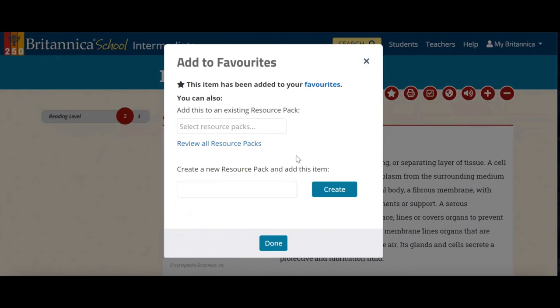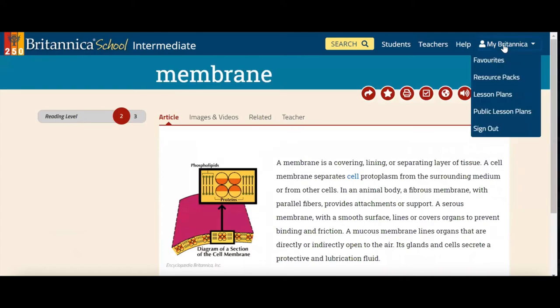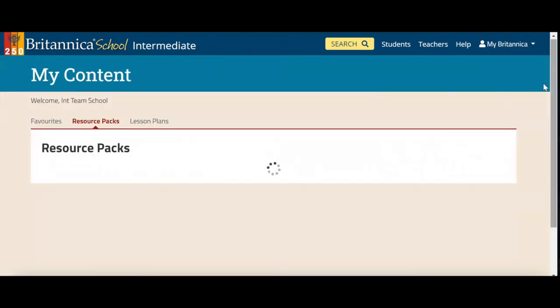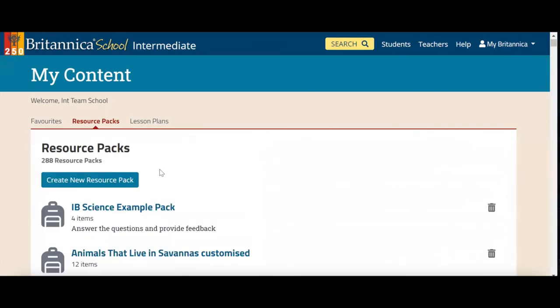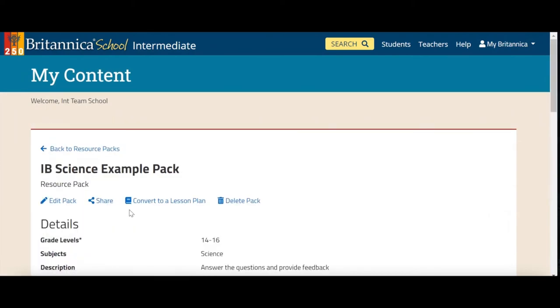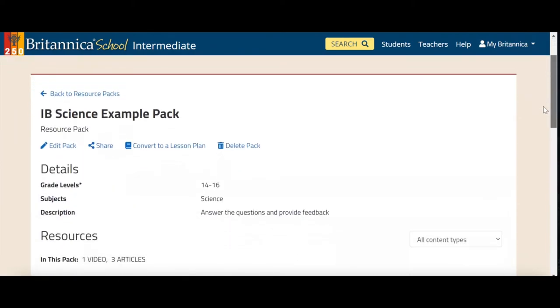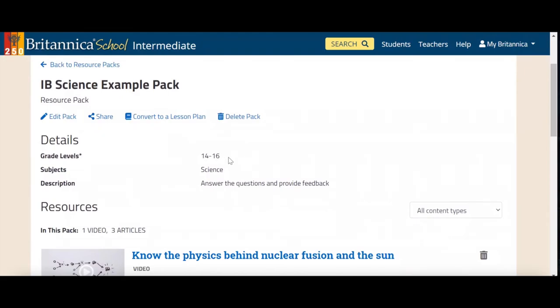So you can do this around a completely new pack. So you can name it whatever you want, or you can add this maybe to an existing pack that you've made before. Once you've created a pack and added in your particular content, where that will be sent is up here to your Britannica area. Now I've made a pre-made pack for this example. So I'm just going to click on my resource packs here, and then I'm going to go on to the pack that I've made. So once it loads, I'll be able to show you. Here, IB Science Example Pack.